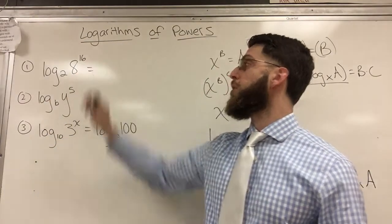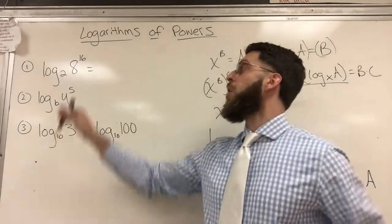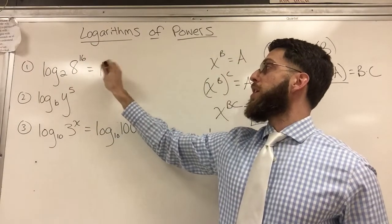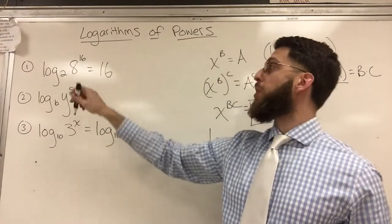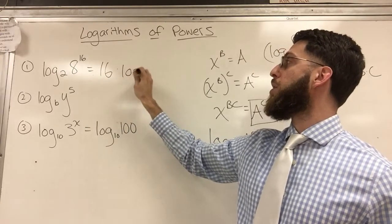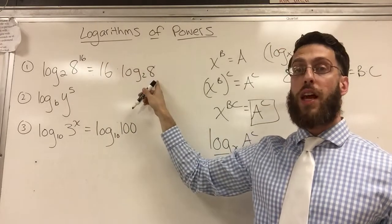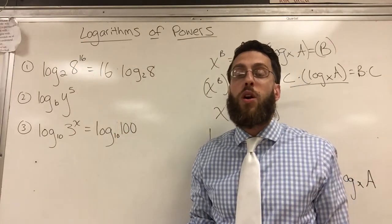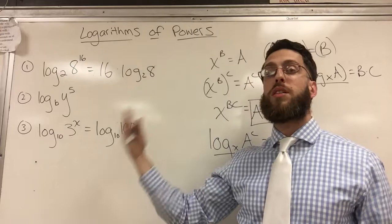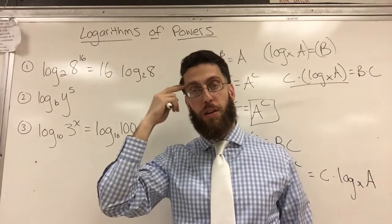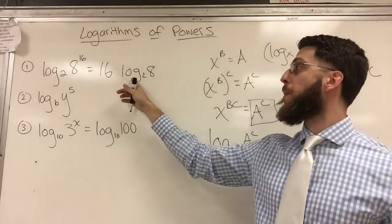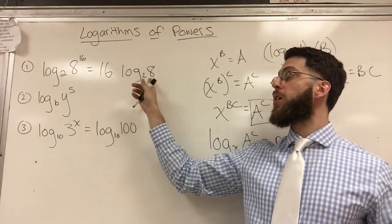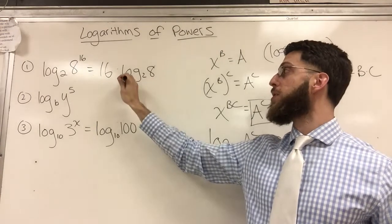So here's an example. Let's rewrite it, just like I said, rewriting the 16 as the coefficient because it was the exponent. And now it's times the log base 2 of just 8. And the reason the power rule is helpful is because 8 to the 16 is a huge number that I don't know. So sometimes it's helpful because it gets smaller calculatable numbers. So do I know what the log of base 2 of 8 is? Just this alone?